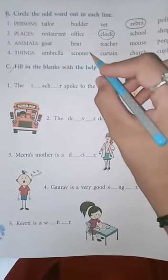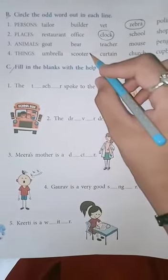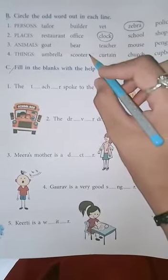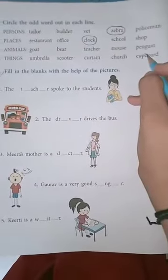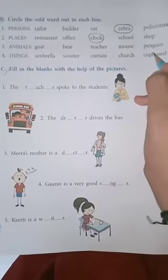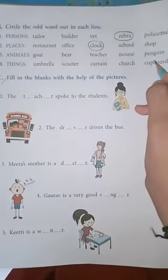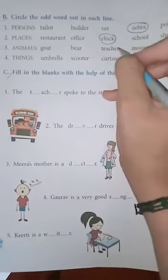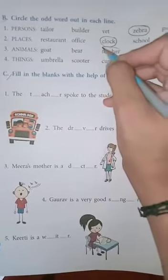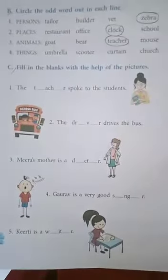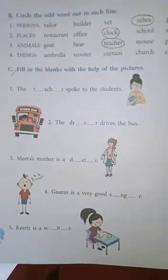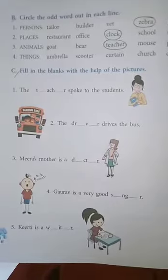Third one, animals: goat, bear, teacher, mouse, and penguin. What is the odd one among these? Yes, of course it is teacher. Because teacher is not an animal.